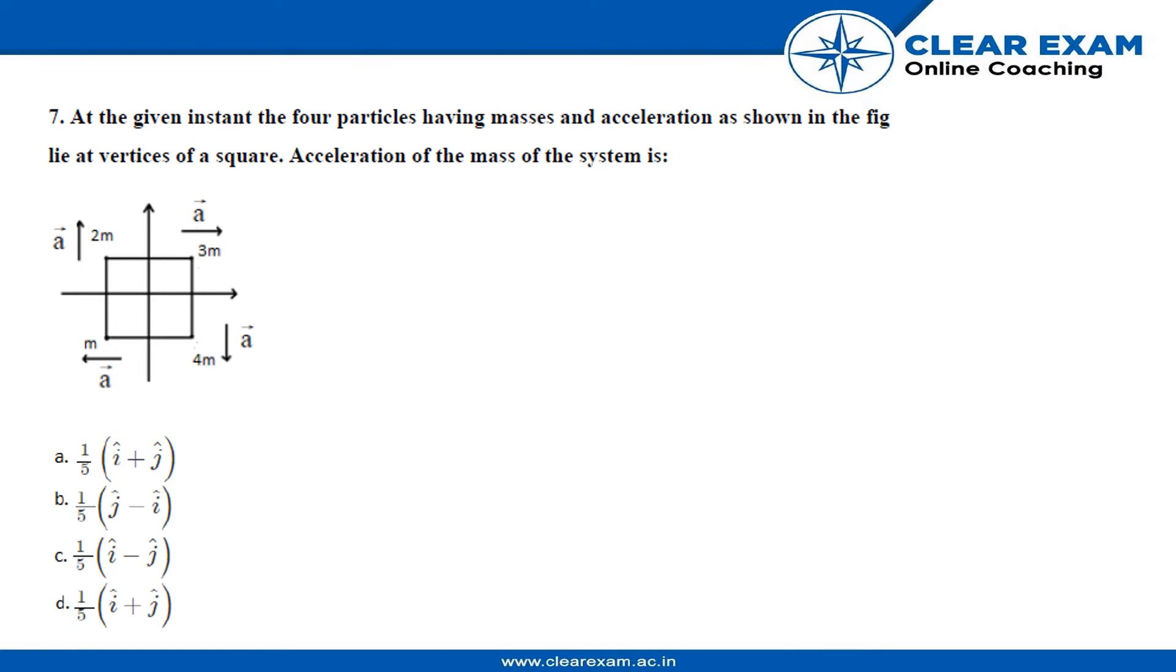Question 7 is: at the given instant the four particles having masses and acceleration as shown in the figure lie at the vertices of a square.